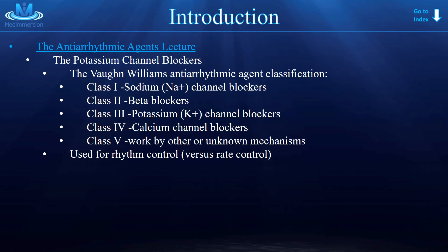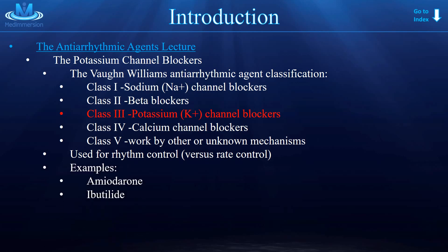The potassium channel blockers in the Vaughan Williams antiarrhythmic agent classification are the class three antiarrhythmics. We use the potassium channel blockers and the class one sodium channel blockers for rhythm control. The class twos and class fours are more rate control. Four drugs we are going to talk about are amiodarone, ibutilide, dofetilide, and sotalol, which you can remember by the mnemonic AIDS.